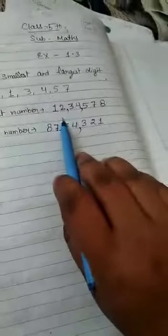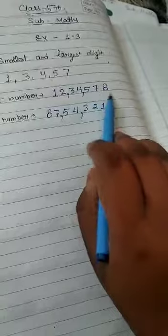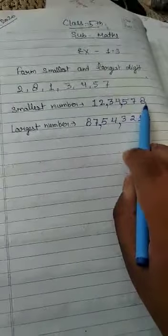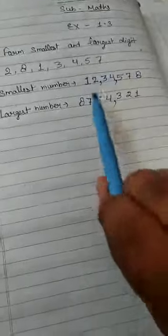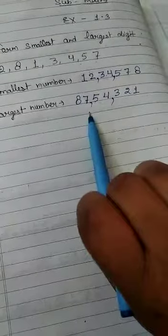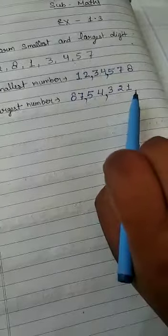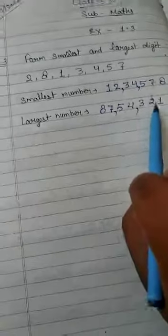1,234,578 is the smallest digit by using these numbers and 8,754,321 is the largest digit that we form by using these numbers.